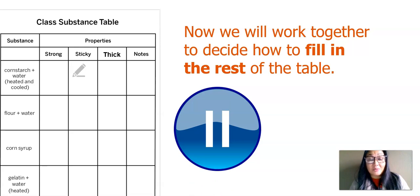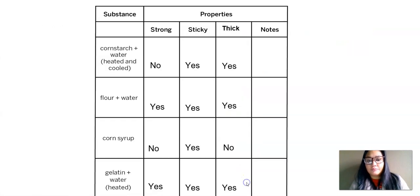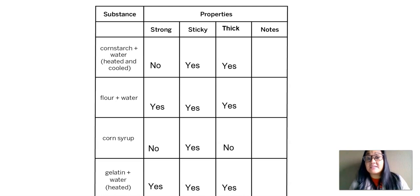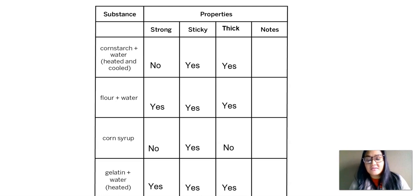I'm going to show you how I filled in the class substance table. For cornstarch and water: no for strong, yes for sticky, yes for thick. For flour and water: yes for strong, yes for sticky, yes for thick. For corn syrup: no for strong, yes for sticky, no for thick. And for gelatin and water: yes for strong, yes for sticky, yes for thick. I'm wondering if our substance table matches or if you had different ideas.